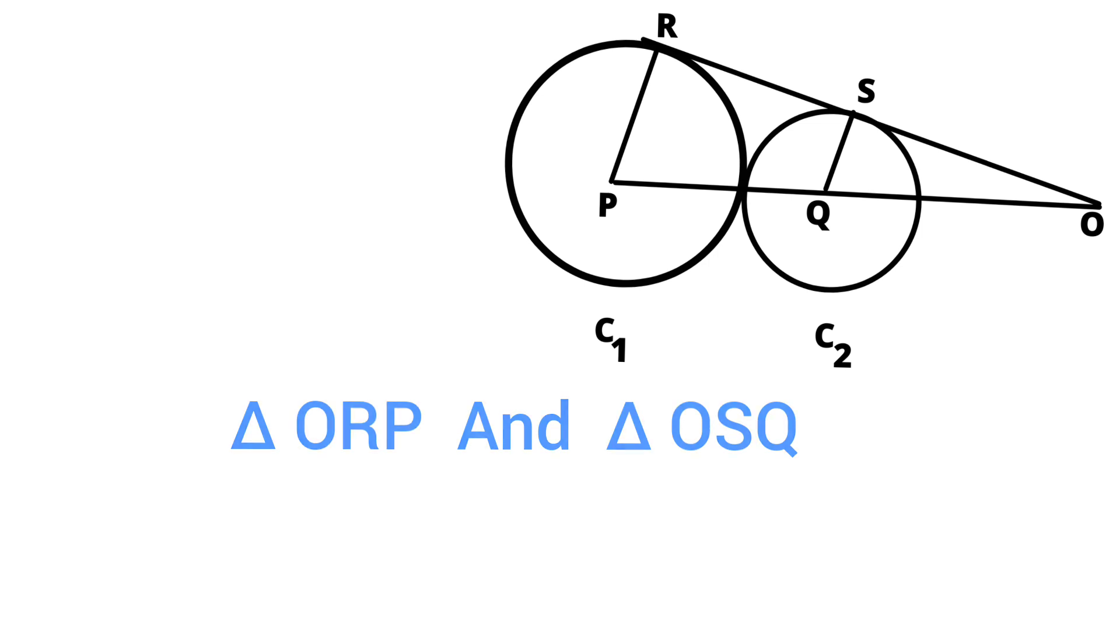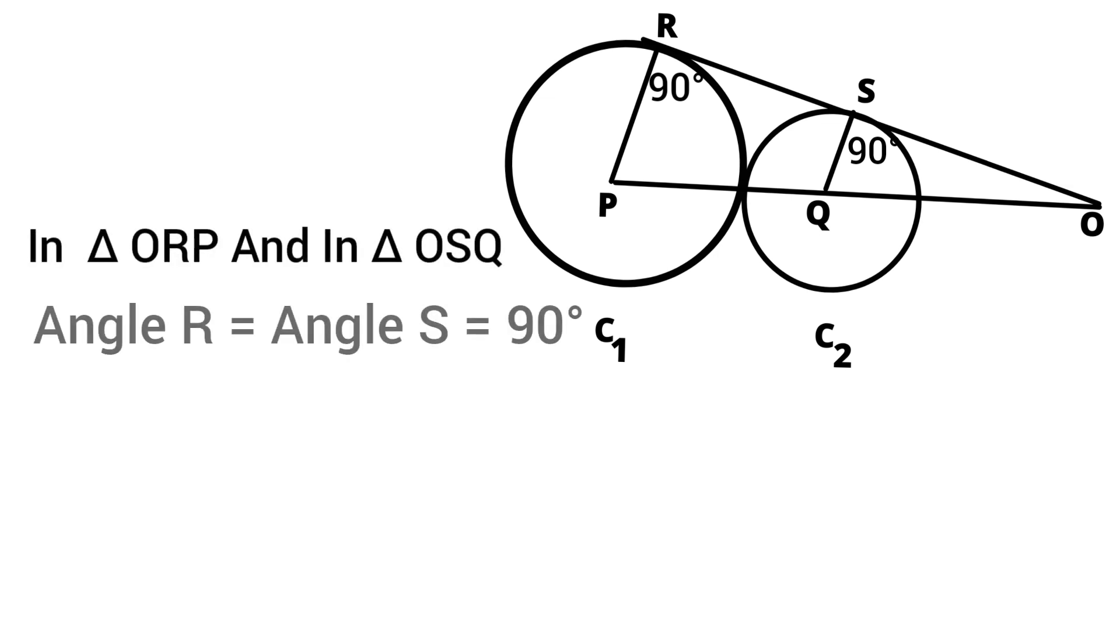We know that tangent and radius make right angle at the point of contact. So, in these two triangles, we can write, angle R equals angle S equals 90 degrees. And angle O is common angle to both triangles ORP and OSQ.